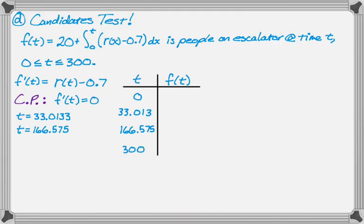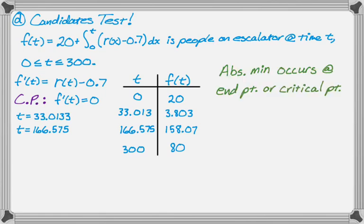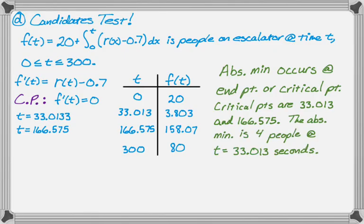So what we're doing is we're looking for the absolute minimum, so from the table you can see the absolute minimum is 3.8, but it's to the nearest person, so let's write up our answers. So the absolute minimum occurs at an end point, or a critical point. The critical points were these values, which we found, and therefore the absolute minimum is going to be 4 people, because we're rounding, and that happens at T equals 33.013 seconds, and we used the candidates test to do that.